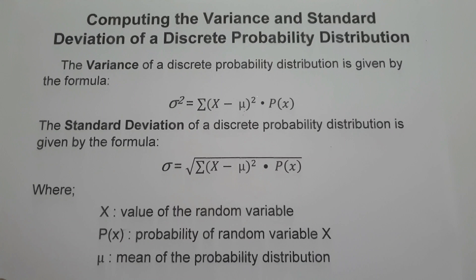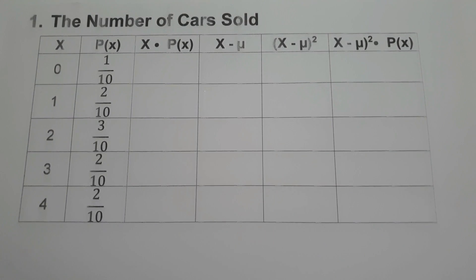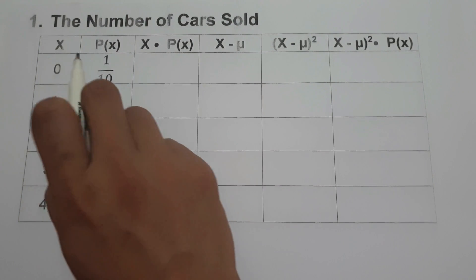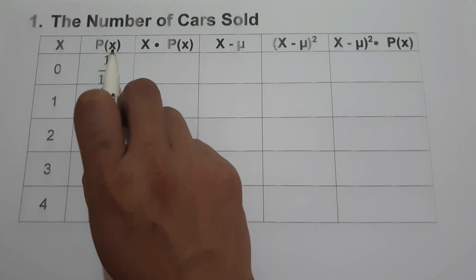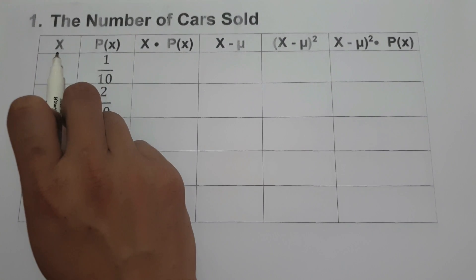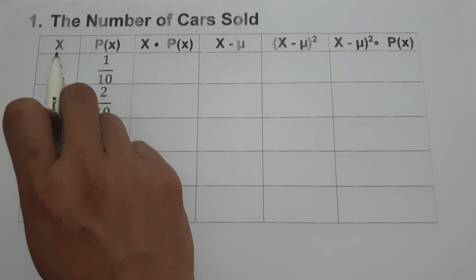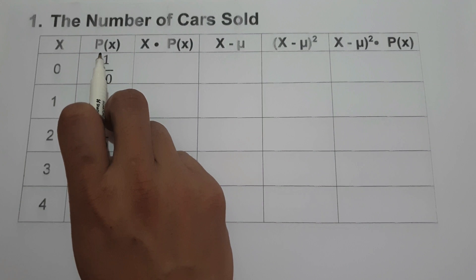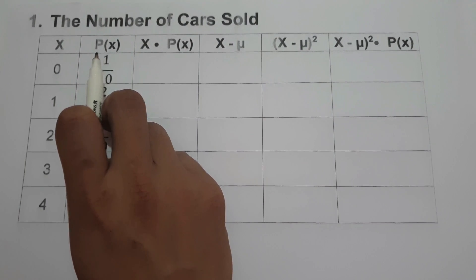Let's start with our first example: the number of cars sold. In the given table, we have the value of x and the value of P(x). x is the value of the random variable, or the number of cars sold, and P(x) is the probability of the random variable x.